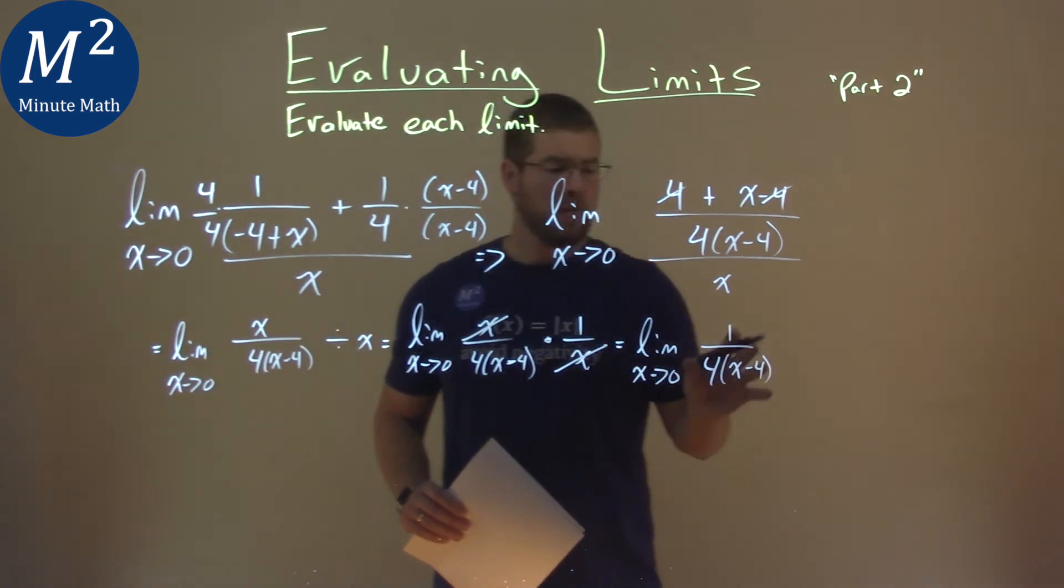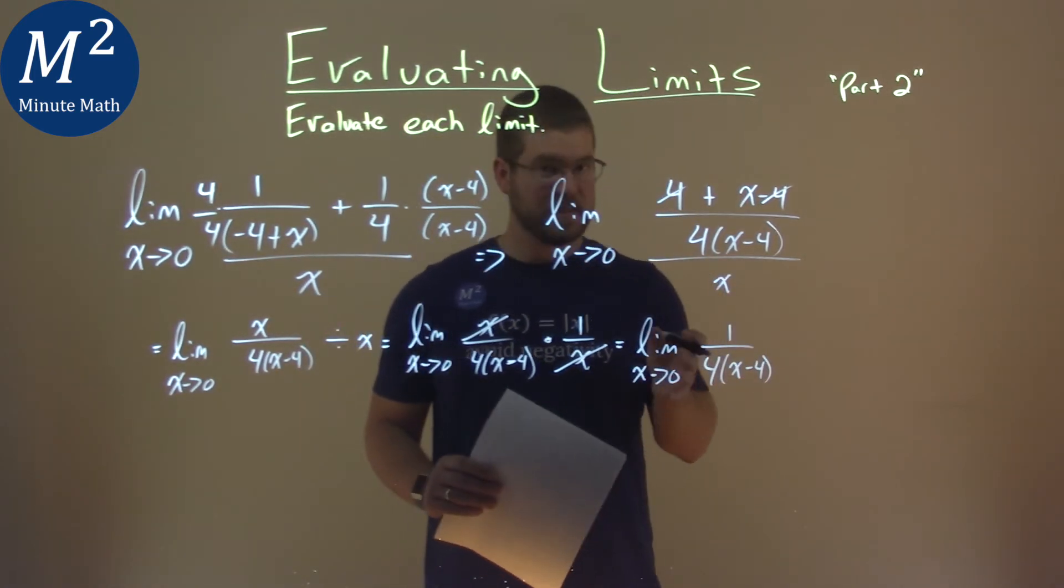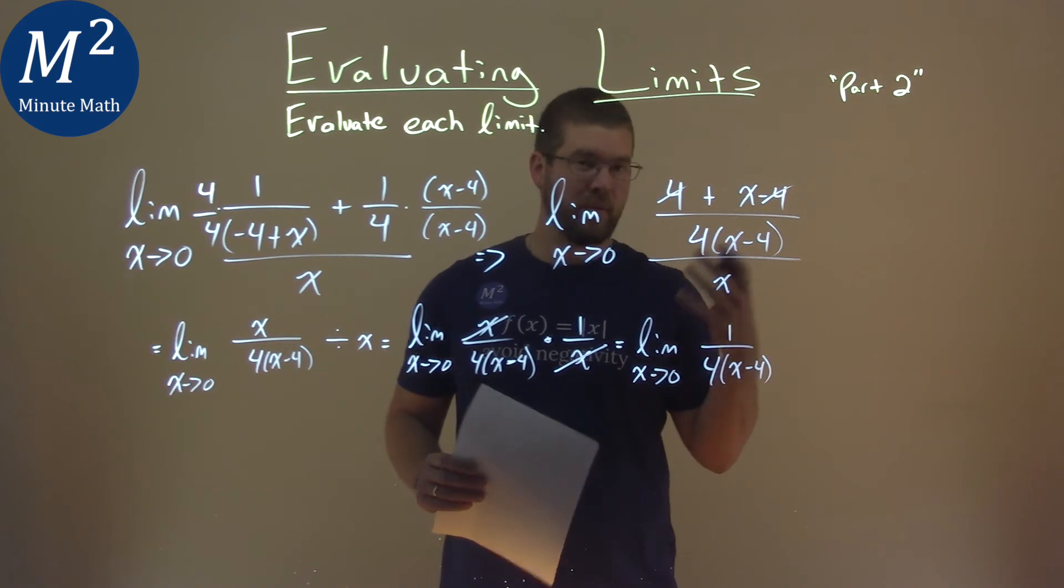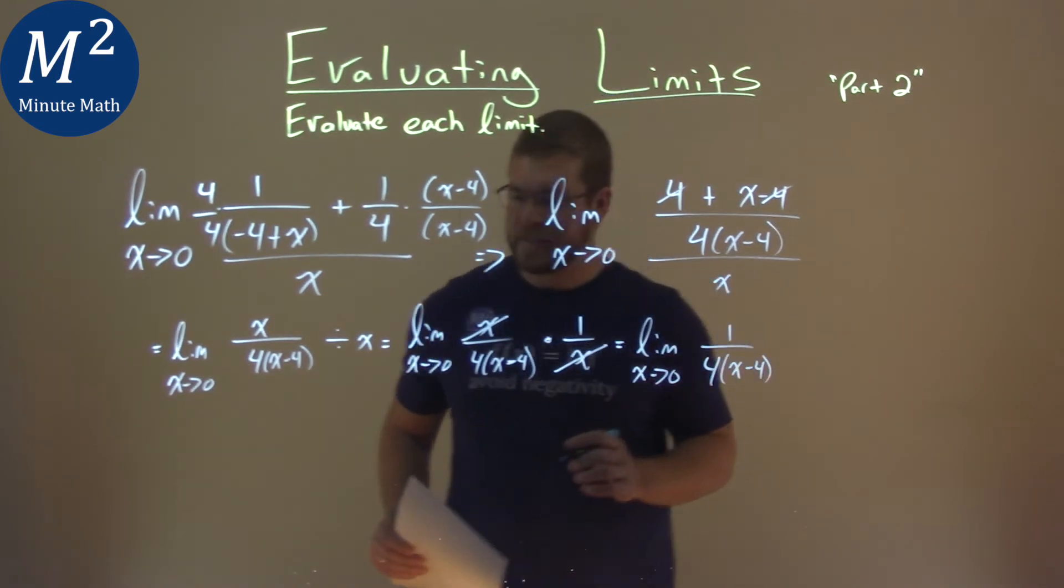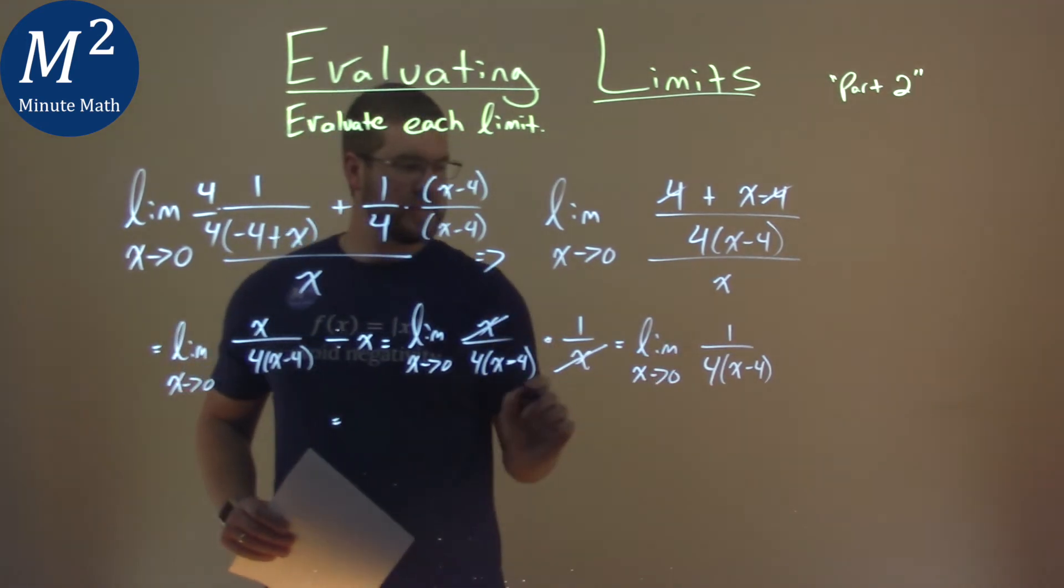Well, at this point, our rational function only doesn't exist when the denominator is equal to 0. And 0 goes in, we're good. So now we can take that limit. We plug 0 in for x.